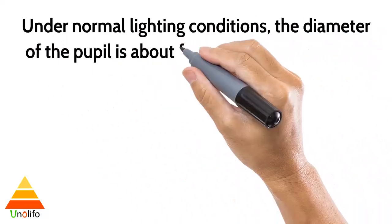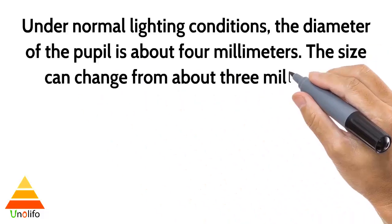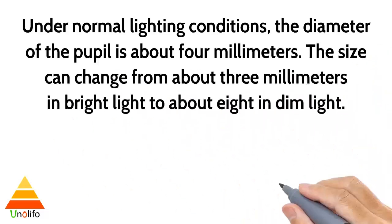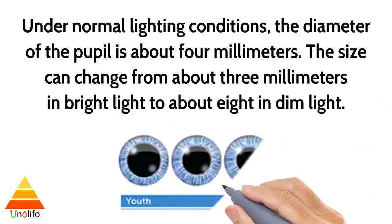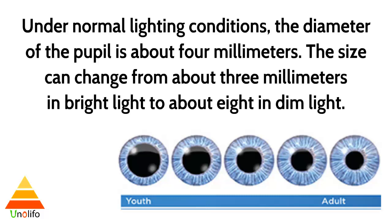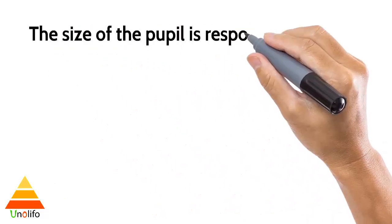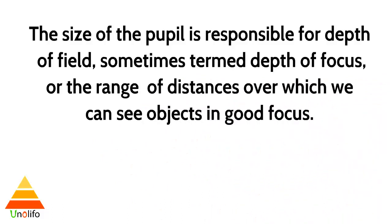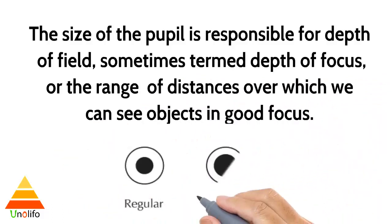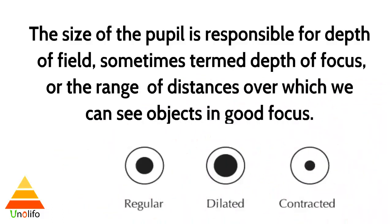Under normal lighting conditions, the diameter of the pupil is about 4 mm. The size can change from about 3 mm in bright light to about 8 mm in dim light. The size of the pupil is responsible for depth of field, sometimes termed depth of focus, or the range of distances over which we can see objects in good focus.